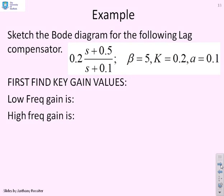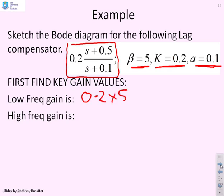So some examples. Sketch the Bode diagram for the following lag compensator. So here it is, 0.2 times S plus 0.5 over S plus 0.1. You'll see that beta is 5, that's the ratio of the zero to the pole, K is 0.2, and A is 0.1. So the low frequency gain is going to be 0.2 times 5, which is 1. The high frequency gain is just going to be 0.2.